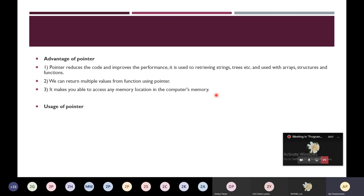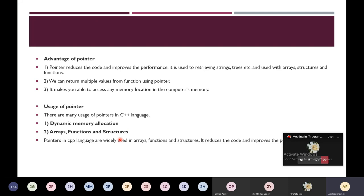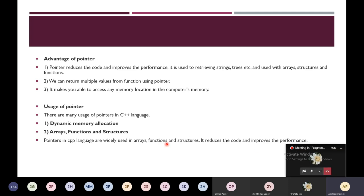The uses of pointers in C++ include: dynamic memory allocation, which we have already covered; use in arrays; use in functions; and use in structures. Pointers reduce code and improve the performance of the system, which is why pointers are used to improve the performance of the system.